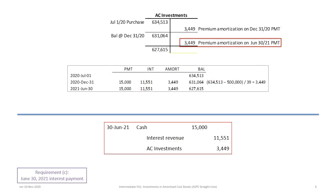There is no remeasurement at December 31st, so we jump to requirement C: the June 30, 2021 payment. Because we are using straight line amortization, the entries are exactly the same. We debit cash for $15,000, credit interest revenue for $11,551, and credit AC investments for $3,449. This adds another $3,449 in premium amortization, resulting in an ending balance of $627,615, as reflected in the amortization table.